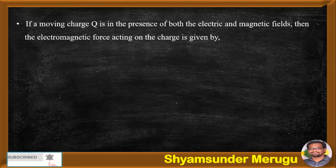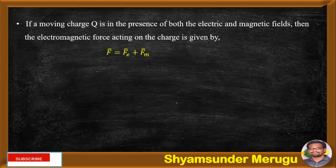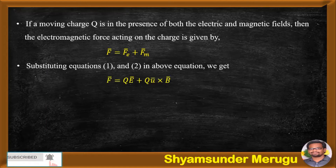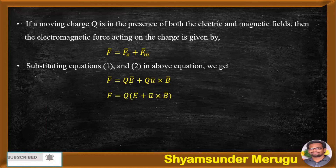If a moving charge Q is in the presence of both the electric and magnetic fields, then the electromagnetic force acting on the charge is given by F bar equals Fe bar plus Fm bar. Now, substituting equations 1 and 2 in the above equation, we get F bar equals QE bar plus QU bar cross B bar. Taking Q as common, we get F bar equals Q of E bar plus U bar cross B bar.